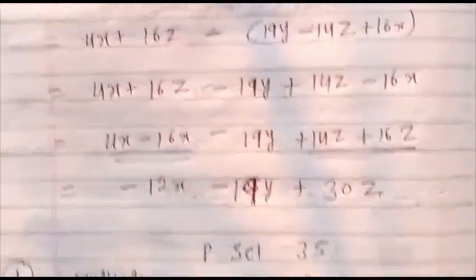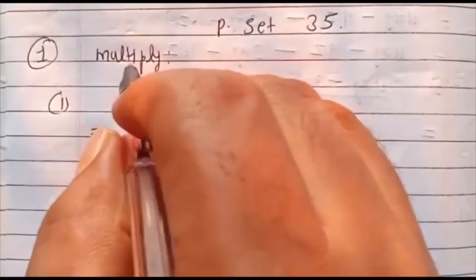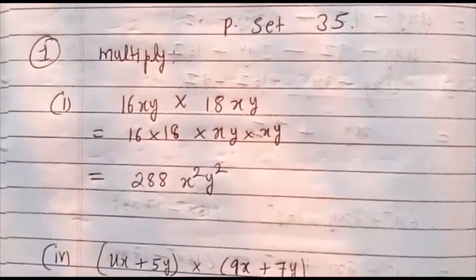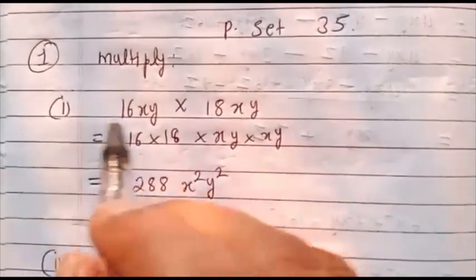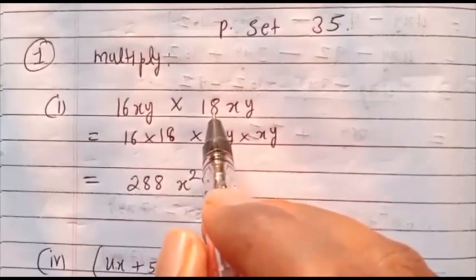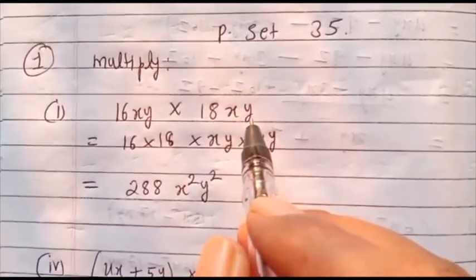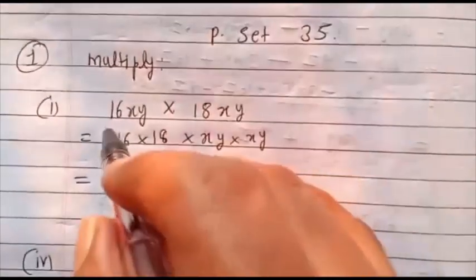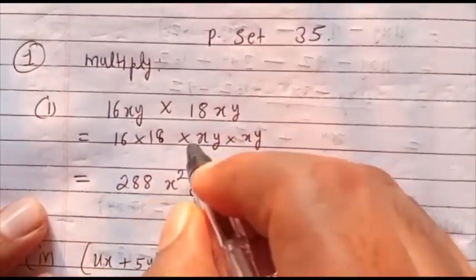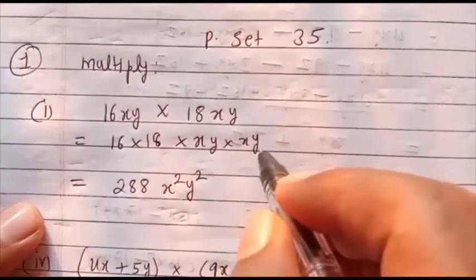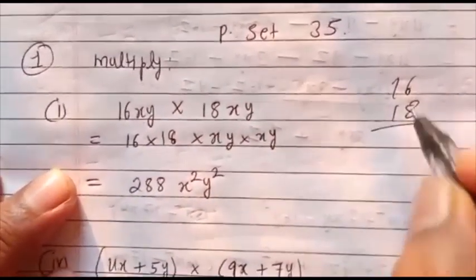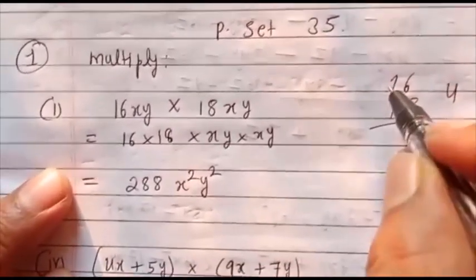Now come to Practice Set number 35. First question: multiply. We take the two terms and multiply. First question: 16xy into 18xy. To multiply, number is multiplied with number. So 16 into 18, and xy into xy.